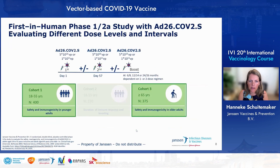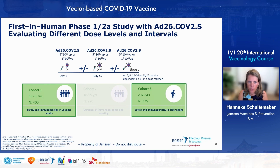We then looked at whether this candidate had the ability to protect in non-clinical models. Monkeys were vaccinated and challenged with SARS-CoV-2 six weeks later. In control animals, there was very good viral uptake reflected in viremia in both the lungs and the nose. In animals vaccinated with Ad26.COV2.S, we did not see any sign of viremia in the lung, and only one out of six animals had transient viremia in the nose. This encouraged us to start a phase one/two study.